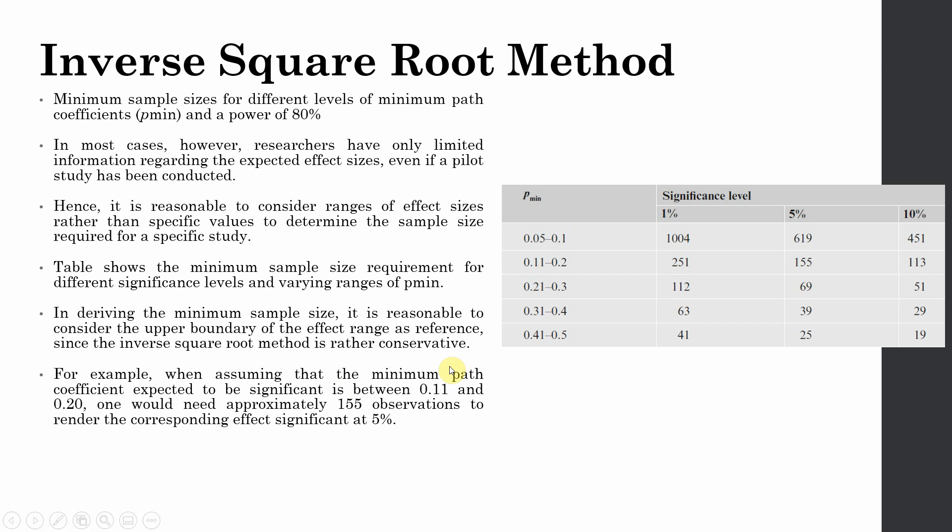When you assume that the minimum path coefficient expected to be significant between 0.11 to 0.20, one would need approximately 155 observations to render the corresponding effect significant at 5%. If you assume that your path coefficient will be significant between 0.21 to 0.30 and your significance level is 5%, then this is your sample size. Similarly, if the minimum path coefficient is 0.31 to 0.40, this is your sample size.